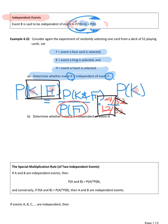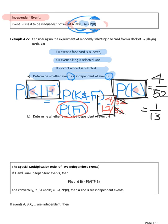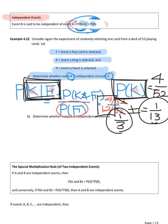Now let me take just P(K) — just King. How many kings? Four kings out of 52. Simplified: one king for each suit, so one out of thirteen. So the left-hand side, P(K given F), is one-third, but P(K) is one out of thirteen. They are not the same. What does that mean? King and Face card are not independent — they are dependent. It makes sense because the king is one of the face cards.